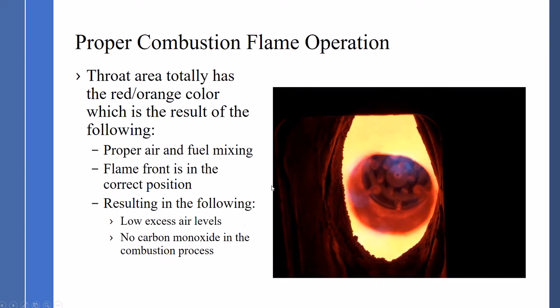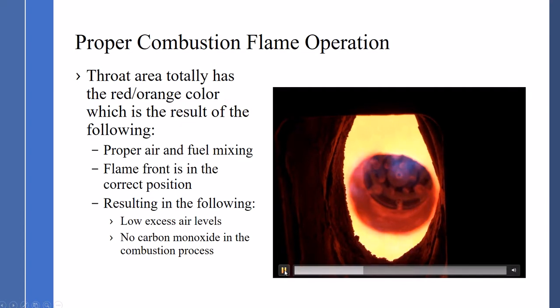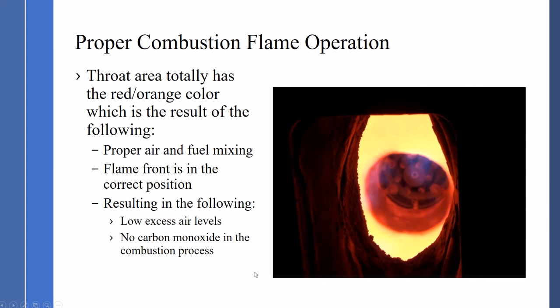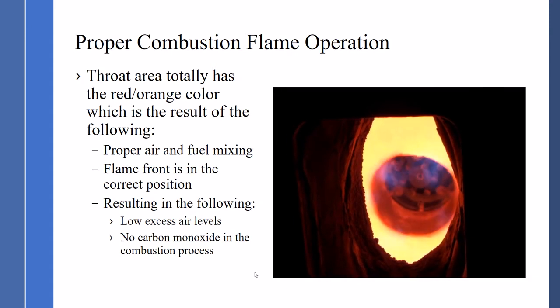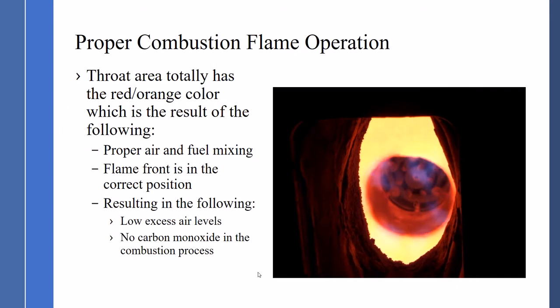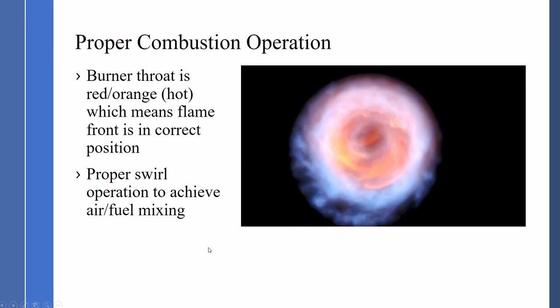For proper combustion flame operation, the throat is totally red and orange in color. Results in proper air and fuel mixing, with the flame front in the correct position, resulting in low excess air levels and no carbon monoxide in the process. The burner throat is red-orange hot, which means the flame front is in the correct position. This operation achieves proper air-fuel mixture.